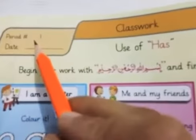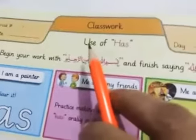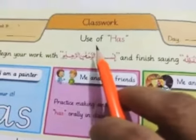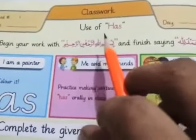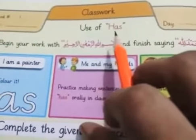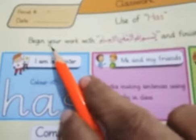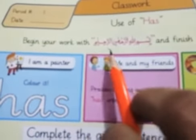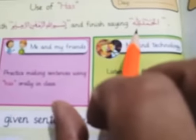First we have to write the date. The topic is: Use of Has. H-A-S. Begin your work with Bismillah ar-Rahman ar-Rahim, and finish saying Alhamdulillah.